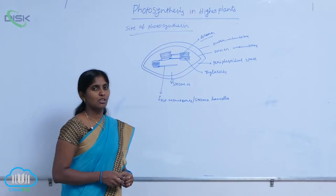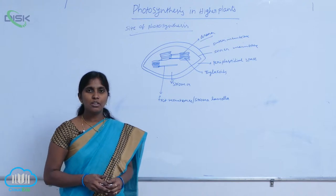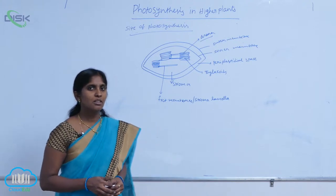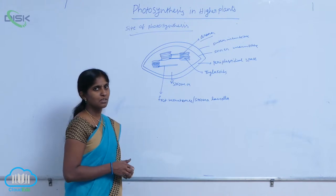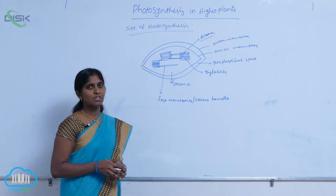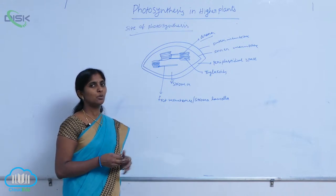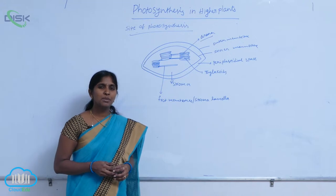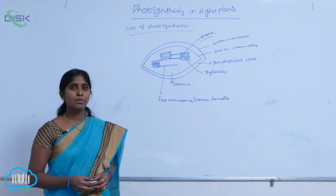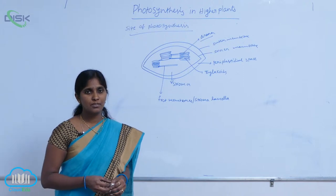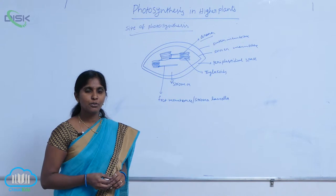The site of photosynthesis is the chloroplast, a cell organelle that is rich in chlorophyll pigments. These chlorophyll pigments are involved in photosynthesis. Chloroplasts are present on the leaves, but a large amount of chloroplasts are present in the mesophyll cells of leaves. That is why the leaf is set as a site of photosynthesis.